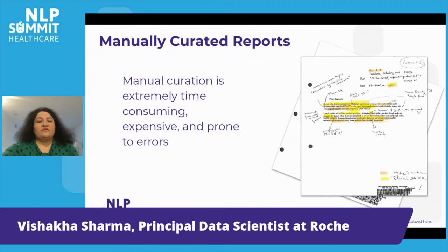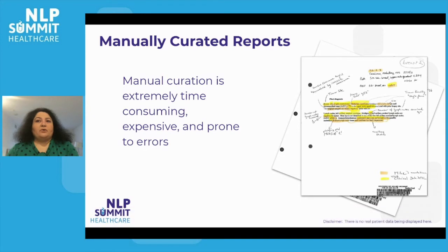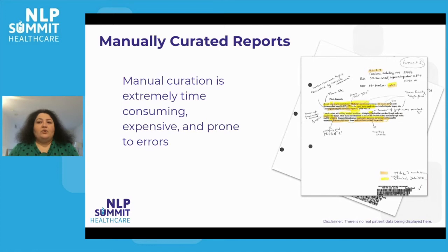In many cases, when a sample report gets reviewed by a pathologist, it looks like handwritten text. If you read closely, you can see they are talking about tumor site, tumor staging, ICD codes, and a bunch of other things. All of these annotations make the report extremely valuable, but the challenge is how do we extract all of this information?